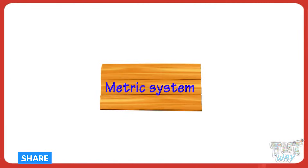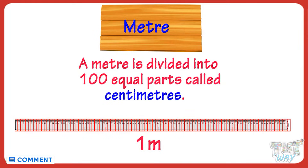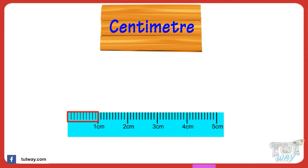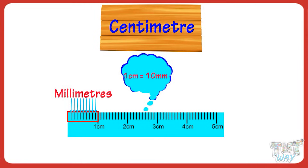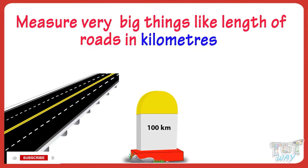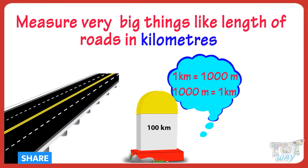We will first learn about measuring length in the metric system. The standard unit of length is meter. A meter is divided into 100 equal parts called centimeters — one meter equals 100 centimeters. One centimeter is divided into 10 equal parts called millimeters, so one centimeter equals 10 millimeters. We measure very big things like the length of roads in kilometers. One kilometer equals 1,000 meters.